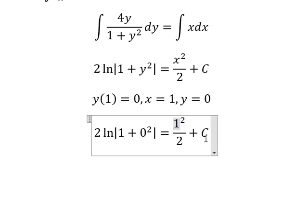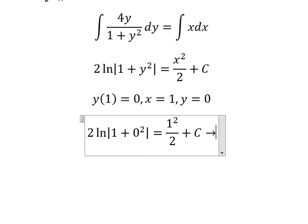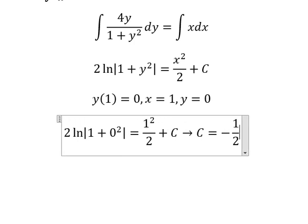If we simplify, we can find the value of c. That's negative 1 over 2. Because ln of 1 equals 0, and 1 over 2 we put on the left. That's why we have negative 1 over 2.